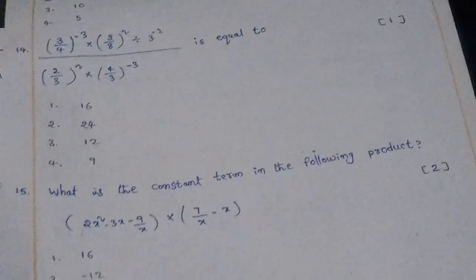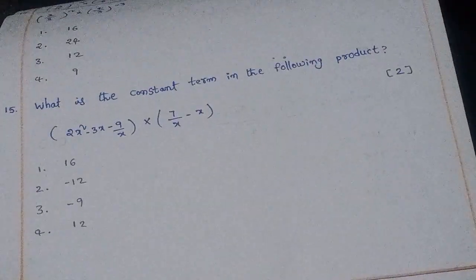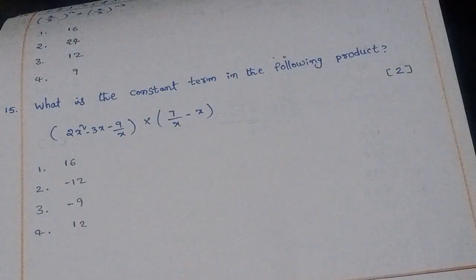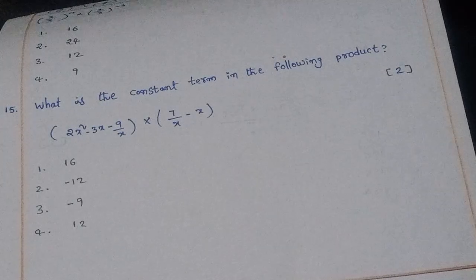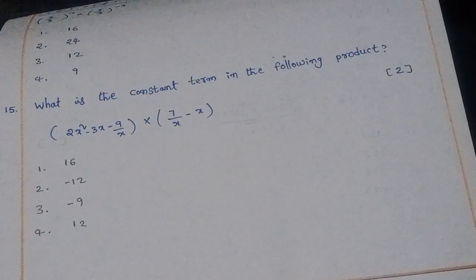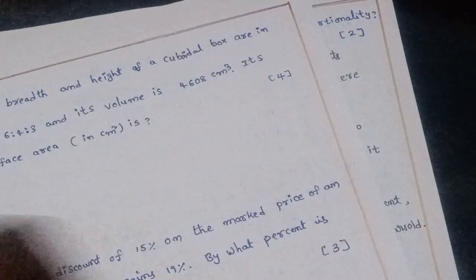Fifteenth question: What is the constant term in the following product: (2x² − 3x − 9)/x × (7/x − x)? The right answer is option 2: −12.